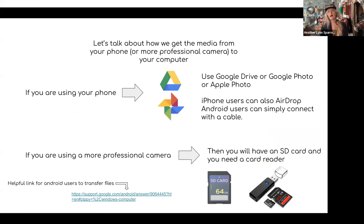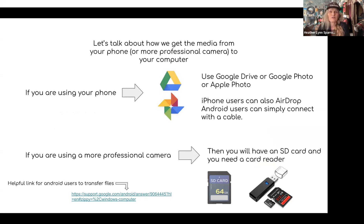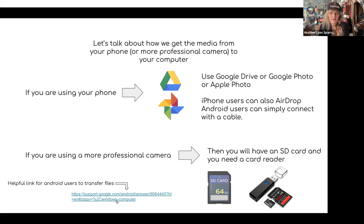Let's talk about how we get media from your phone or camera to the computer. If you're using your phone, you can use Google Drive or Apple Photos, or hook up your phone with a cable and download using AirDrop. Android users can also just connect a cable. If you're using a Mac, you can use Image Capture to get things off your phone without opening iMusic or Apple apps. If you're using a more professional camera, you'll need an SD card and card reader, unless the DSLR has Bluetooth and you can AirDrop it to your computer.